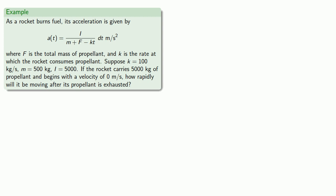M is the mass of the rocket itself without the fuel. So suppose K equals 100 kilograms per second, M is 500 kilograms, and I is 5000. If our rocket initially carries 5000 kilograms of propellant and begins with a velocity of 0 meters per second, how rapidly will it be moving after the propellant is exhausted?